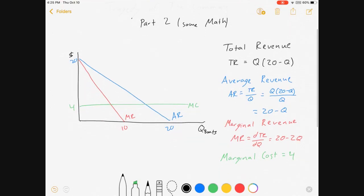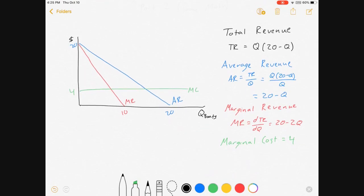And then we'll move on to a scarier example. So if I want to find how many boats will be in the unregulated market, I'm looking for this intersection where average revenue meets marginal cost. So I'm going to set average revenue equal to marginal cost. That's 20 minus Q equals 4.